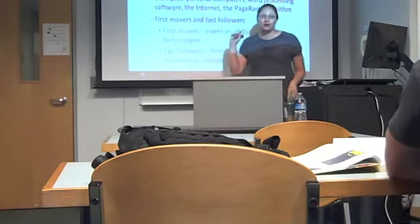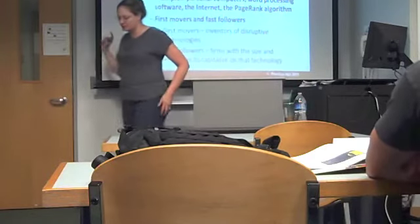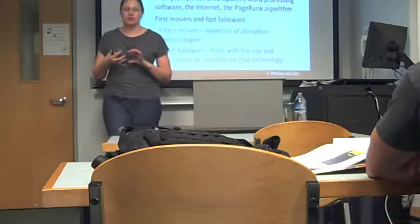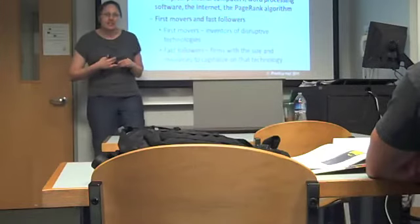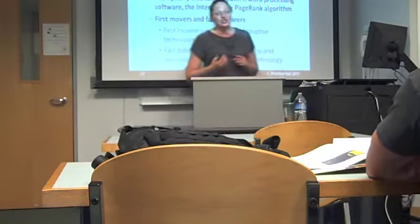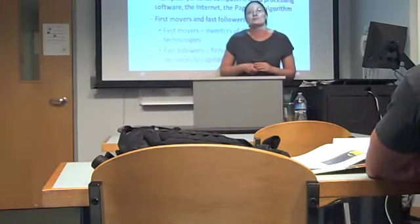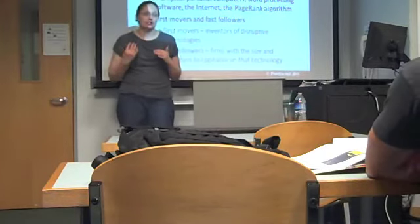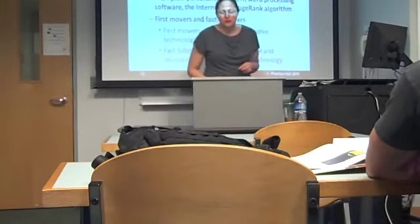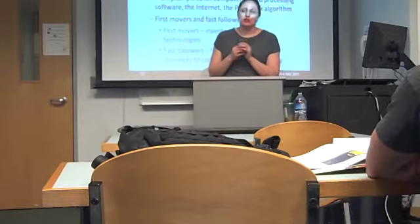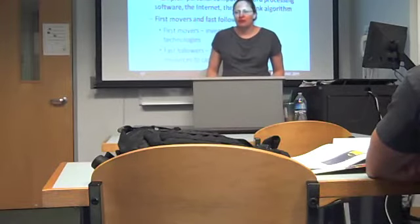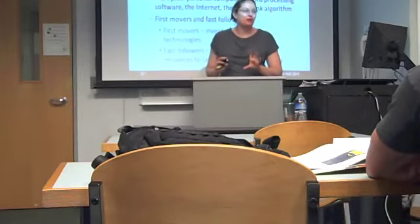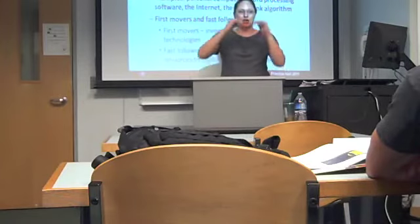The page rank algorithm is the algorithm that Google search is based upon. It looked at other factors besides just keywords in order to rank the relevance of a particular web page in a search. Other search engines looked solely at keywords, and if you know anything about web development, there are ways of doctoring how your web page is seen by keyword searches. Web pages would put every keyword they could possibly think of — stuff that has nothing to do with their content — just to be close to the top of as many searches as possible.